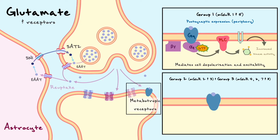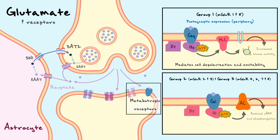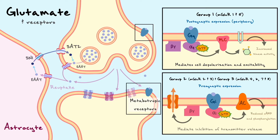Group 2 and group 3 mGluRs are usually coupled to the Gi G-protein, which is responsible for inhibiting adenylyl cyclase and the subsequent production of cAMP, reducing phosphorylation in the cell. Group 2 and 3 receptors are also associated with direct regulation of ion channels by the liberation of beta and gamma subunits. Receptors in group 2 and 3 are often localized presynaptically and generally mediate inhibition of transmitter release.